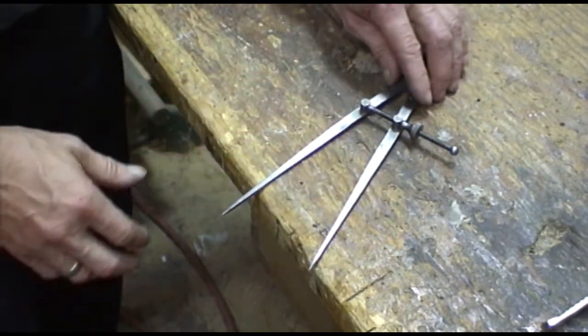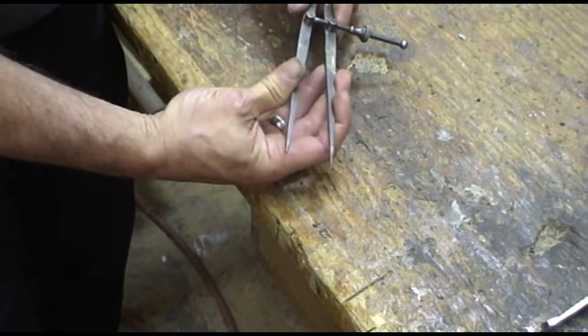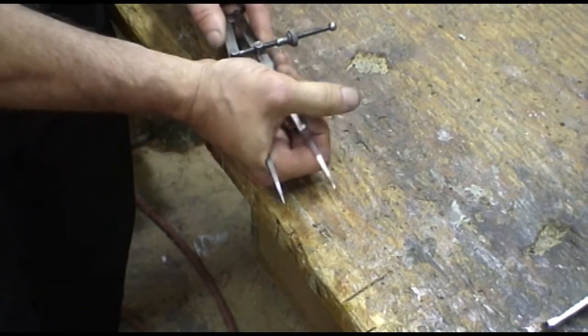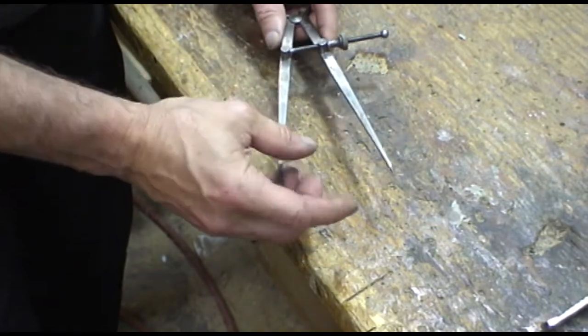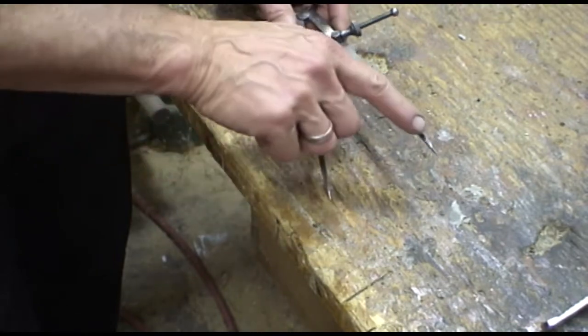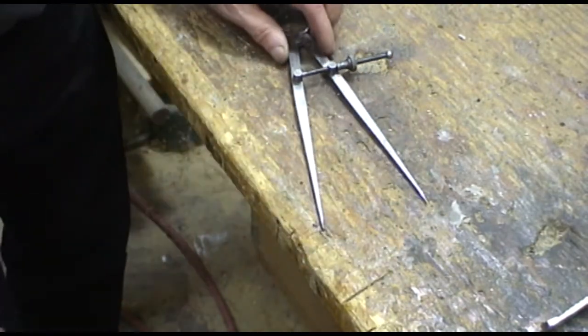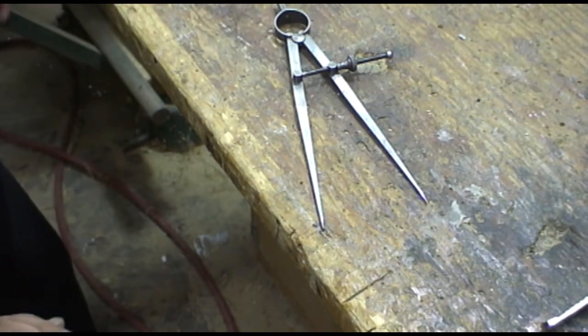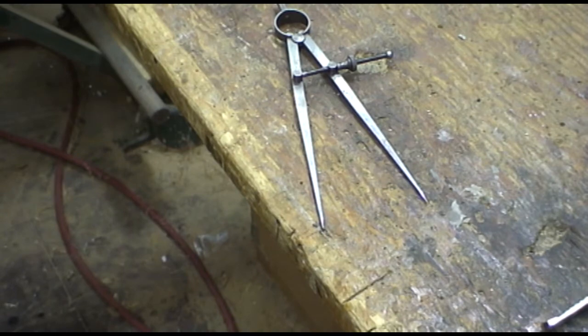I have this pair of dividers that I use for layout work and I'm having a problem with them. Both of these legs are sharpened in a chisel point which makes it very easy to line up on a scale.